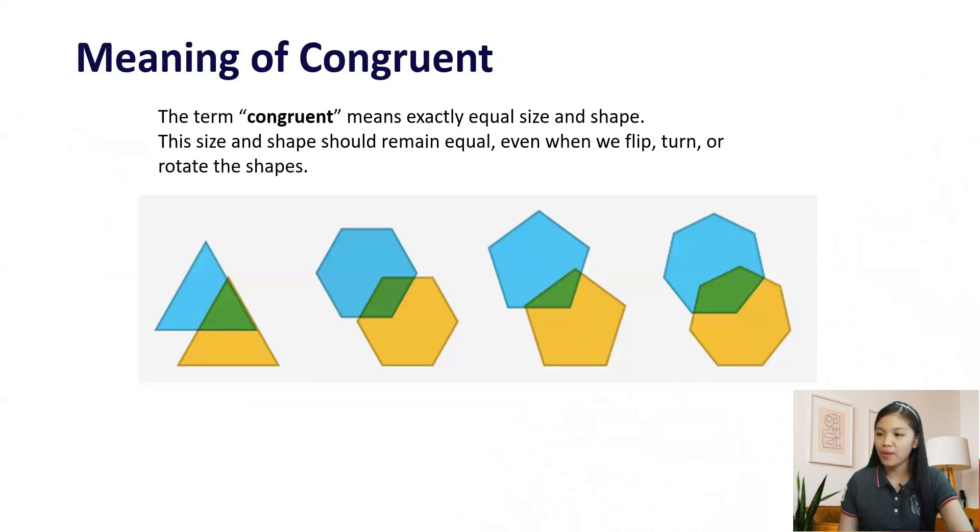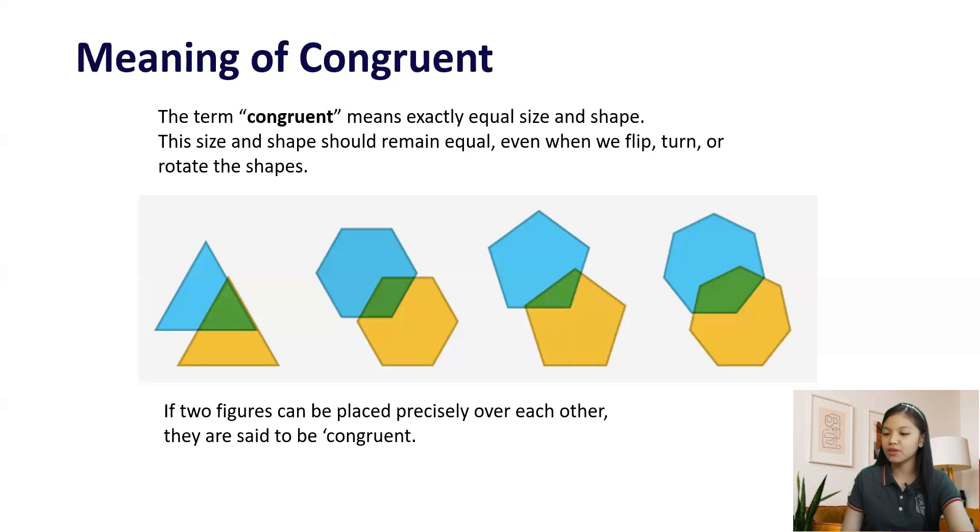The term congruent means exactly equal size and shape. This size and shape should remain equal even when we flip, turn, or rotate the shapes. If two figures can be placed precisely over each other, they are said to be congruent.